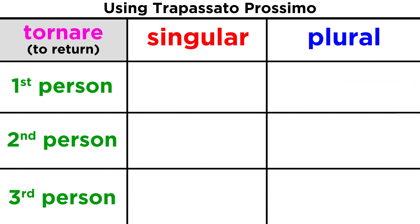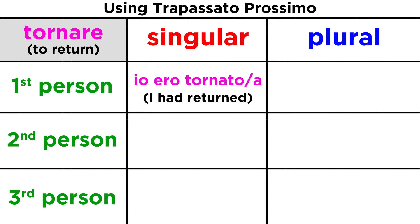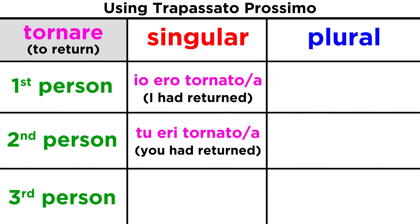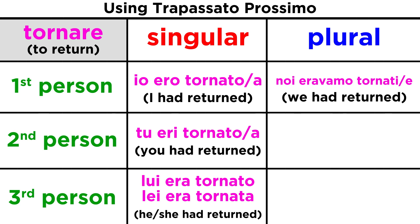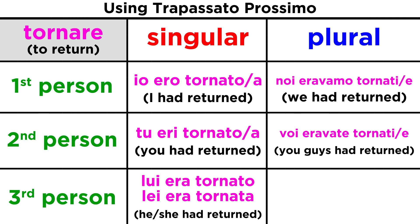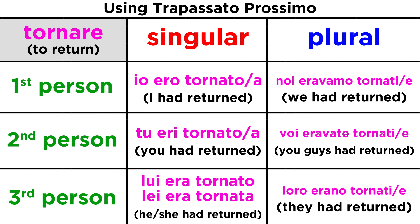The second verb is tornare, an intransitive verb taking essere. Io ero tornato o tornata, tu eri tornato o tornata, lui era tornato o lei era tornata, noi eravamo tornati o tornate, voi eravate tornati o tornate, loro erano tornati o tornate.